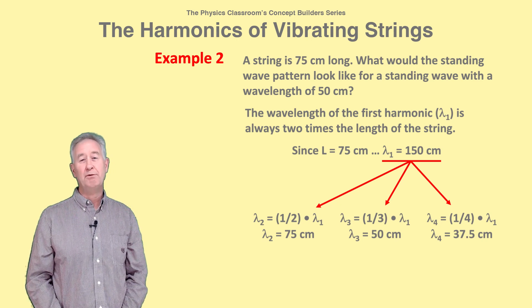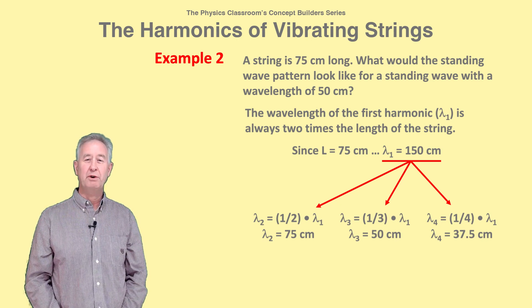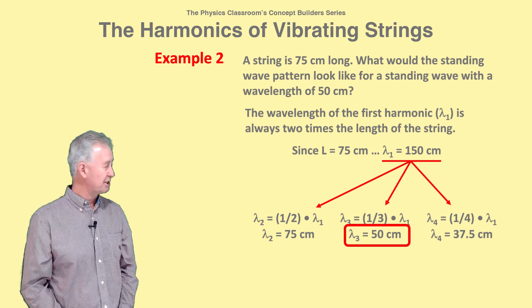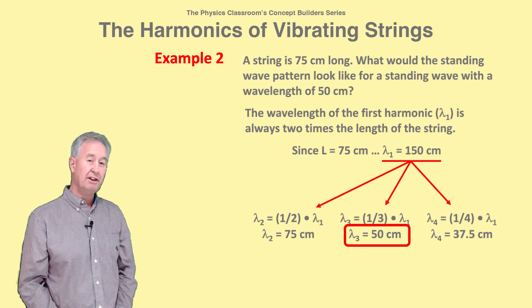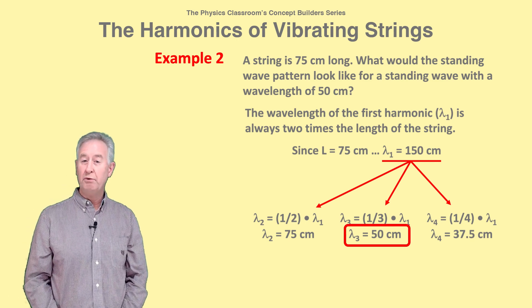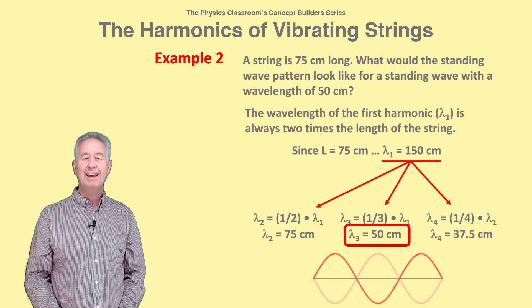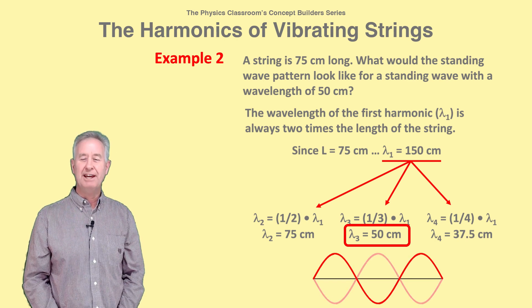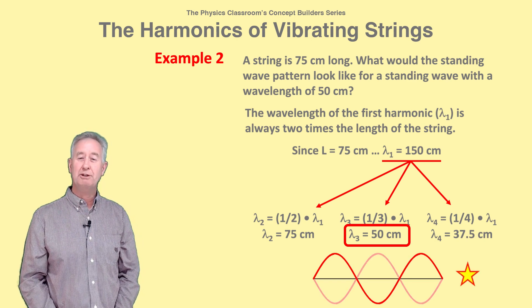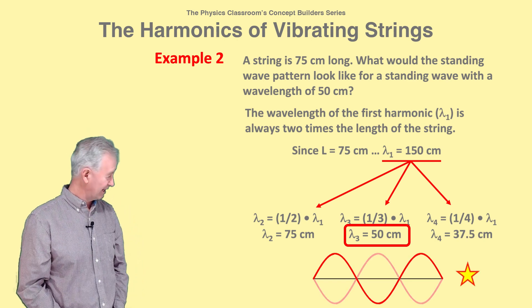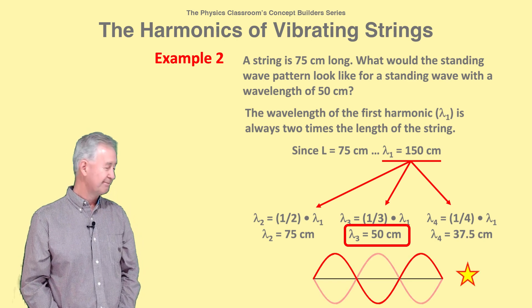like one-half, one-third, one-fourth, etc. The 50 centimeter wavelength is one-third of 150 centimeters and is thus representing the third harmonic and has three antinodes in its pattern, like this one.